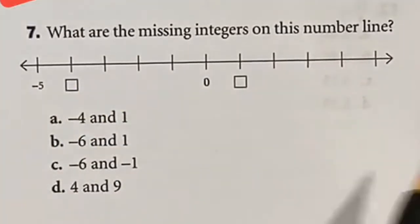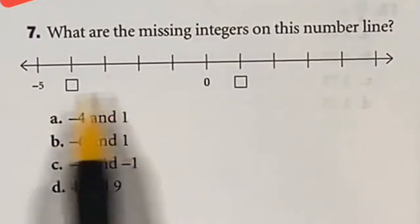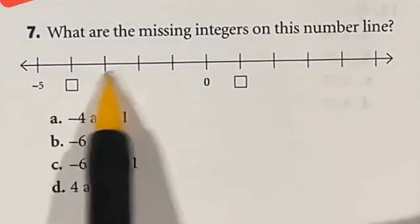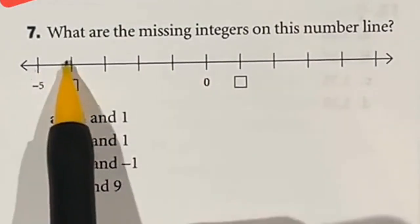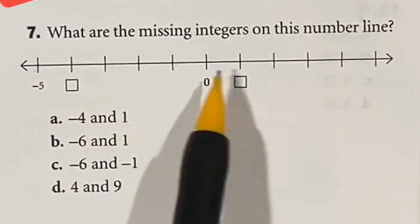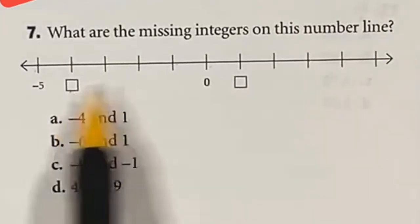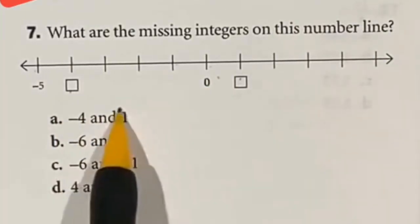On number seven, you just need to know how to read a number line, so it says to fill in these two missing blanks here. Well it seems to be jumping by just one each time because we got negative five, negative four, negative three, negative two, negative one, and then zero. So that means that this is negative four and this is going up one, so that would just be one. Answer is A.